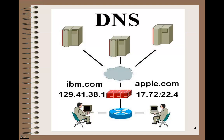Again, we've got another user trying to connect to Apple.com, and again it will check the local computer to see if you've connected to that before. If you have, it'll know what the IP address is. If it hasn't, it'll go out to your router or whatever's providing your immediate service and check if it's in that cache. If not, it'll go to the service provider's DNS. If the service provider doesn't have it, it'll end up going into the internet and checking one of the main DNS servers.